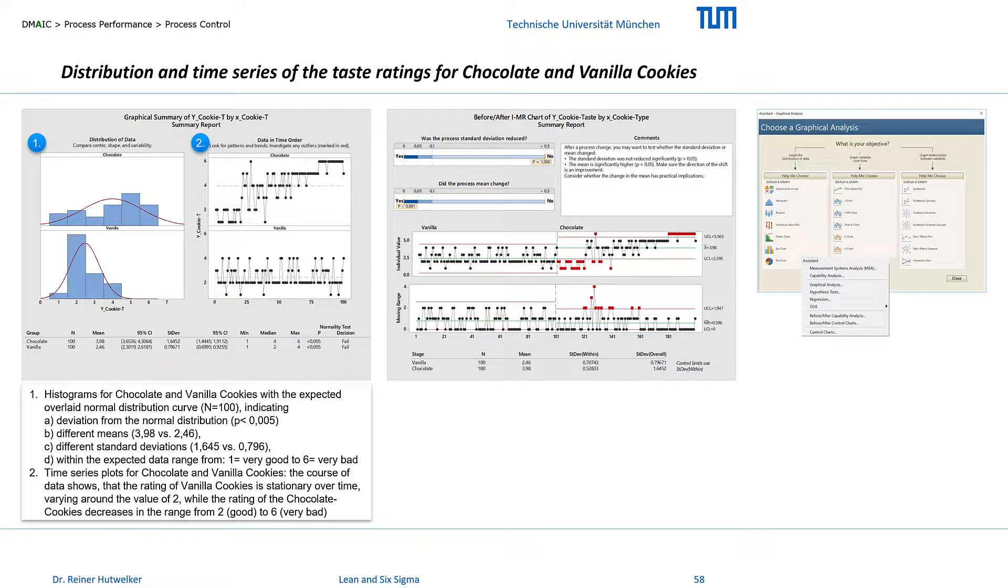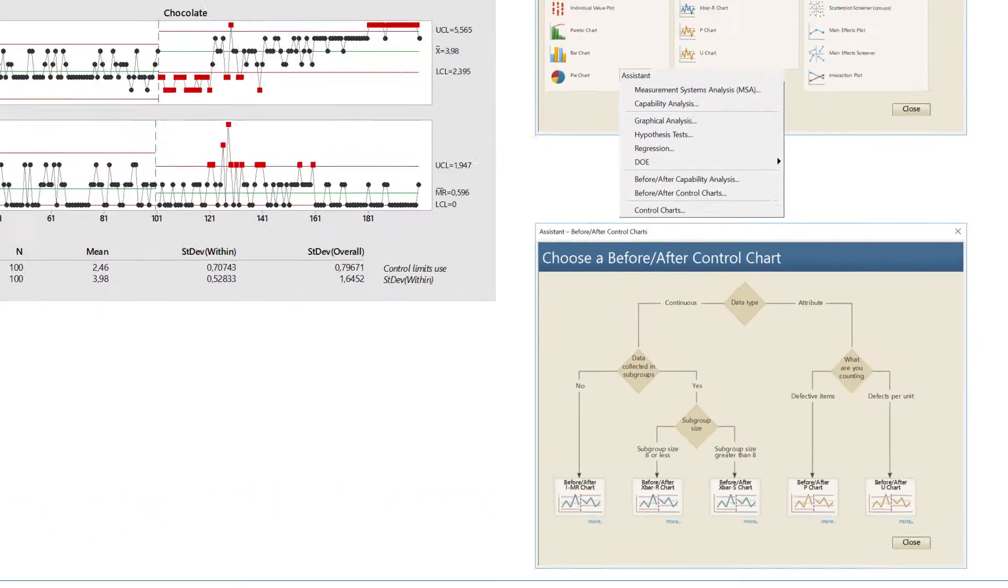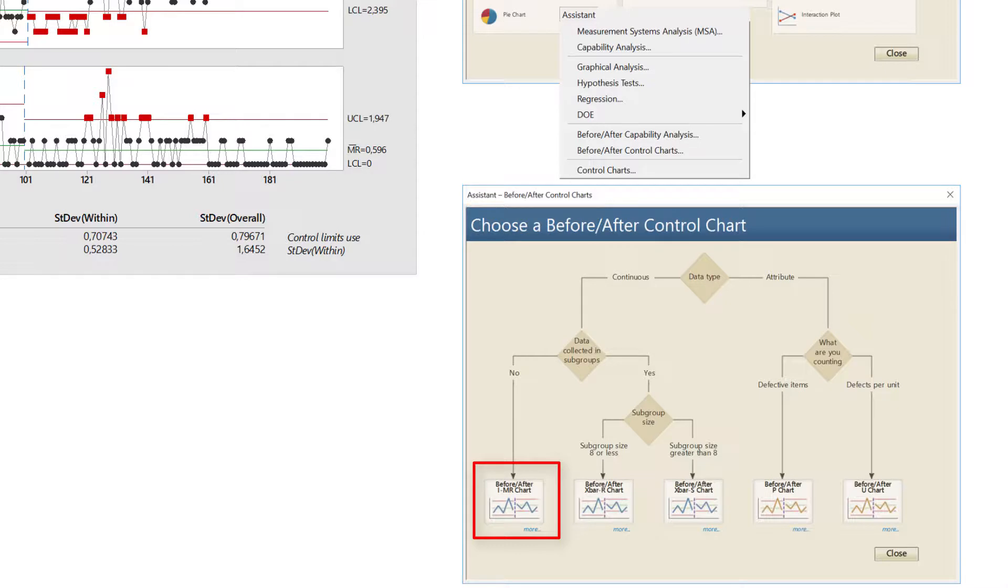Control charts are a special variant of the time series plots. I use the IMR control chart, because the 100 data points in the chart can still be mapped well and do not have to be combined to subgroups for the X bar R or the X bar S chart. And I use the calculation in the before-after control chart of the Minitab assistant.